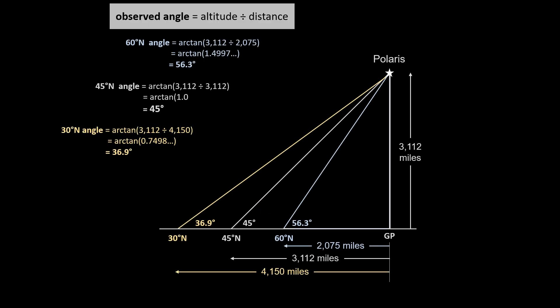But again, we have a problem because when we use the same altitude for Polaris and make this observed calculation for other latitudes, it does not match what we actually see. At 60 degrees north, Polaris should be 60 degrees above the horizon, but the calculated angle is 56.3 degrees.